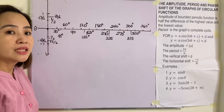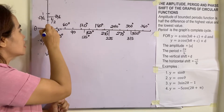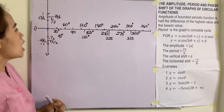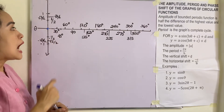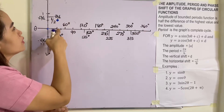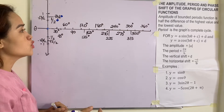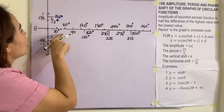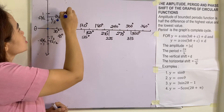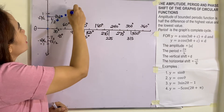We already know the different values of these circular functions. Starting from 0°: sin 0° = 0, sin 30° = 1/2, sin 45° = √2/2, sin 60° = √3/2, and sin 90° = 1. We plot each of these points on the graph.